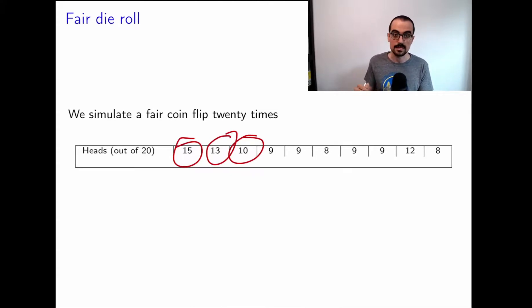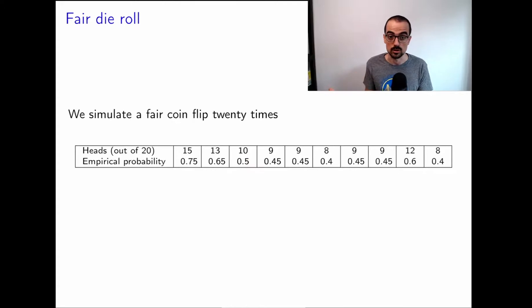So out of these guys, when did we get a perfect estimate for the empirical probability? Look at them carefully. The answer is just once. Just that single time we did get one half. Otherwise, the other estimates for the probability are all wrong. The question is, as everything in life, right? They're not exact, but they should be kind of close to the true probability when we flip the coin many, many times. And we're going to talk a lot more about this.